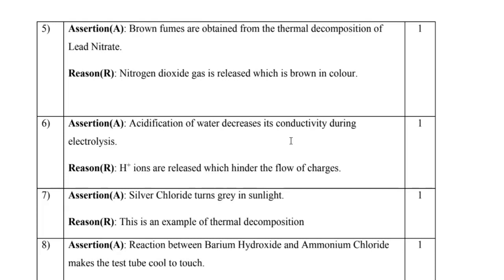Question 7: Silver chloride turns gray in sunlight. The reason given is that this is an example of thermal decomposition. The assertion is correct — silver chloride does turn gray in sunlight because silver metal remains. However, this is photochemical decomposition, not thermal decomposition, so the reason is false. Therefore C is the answer: assertion true, reason false.